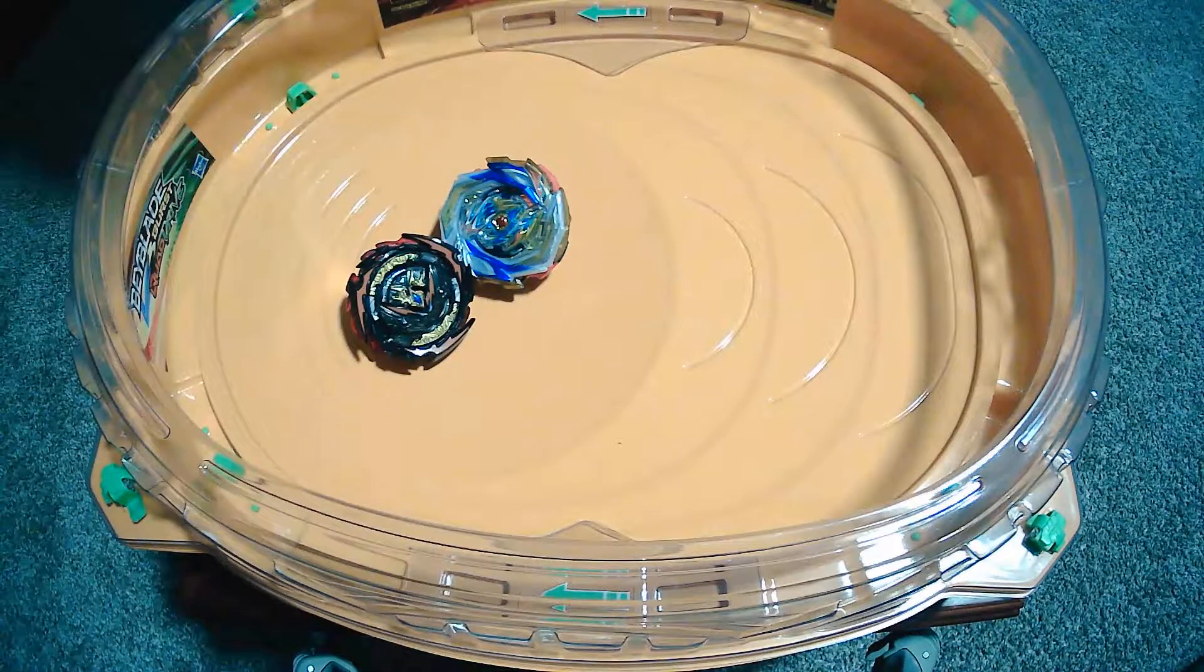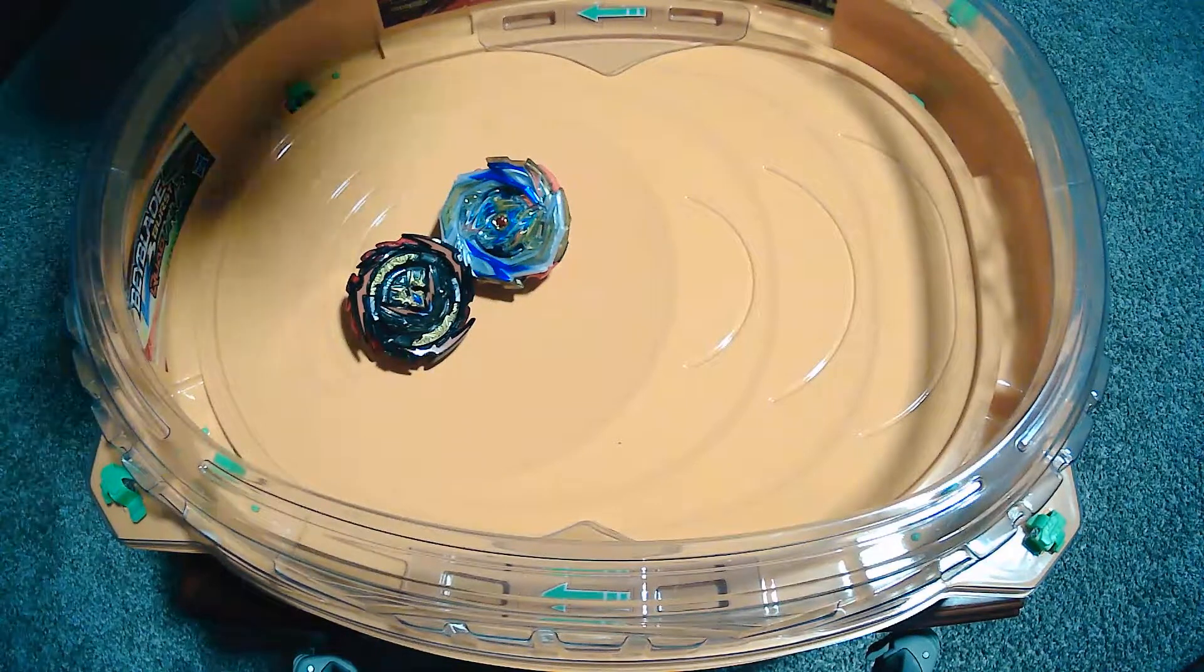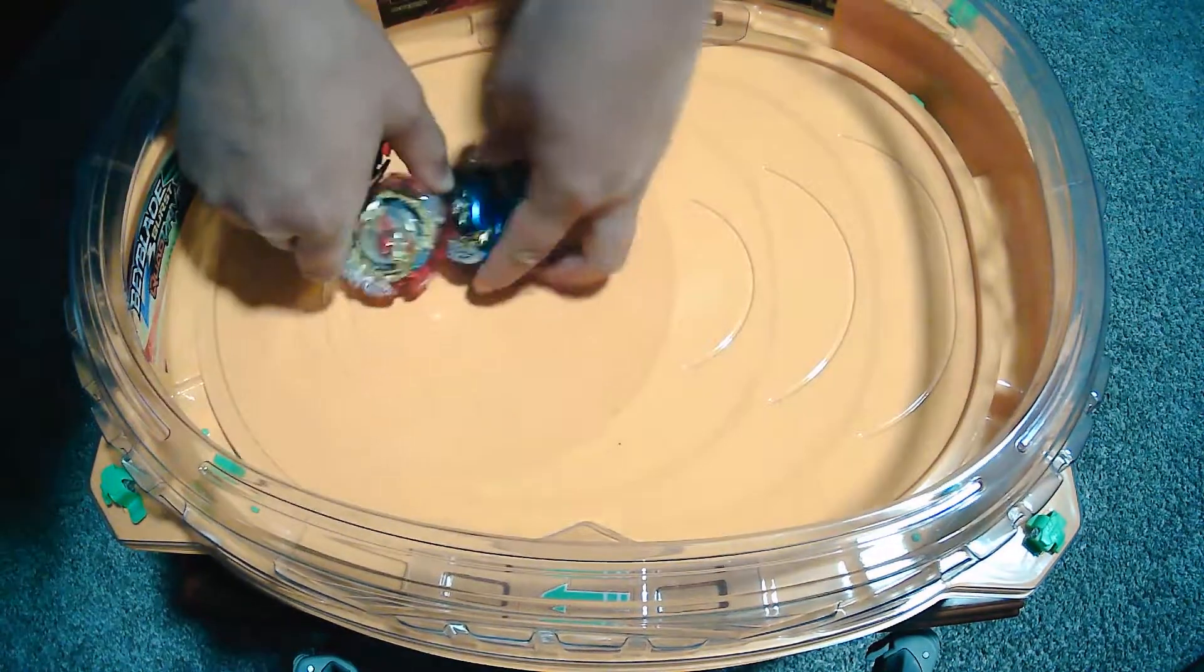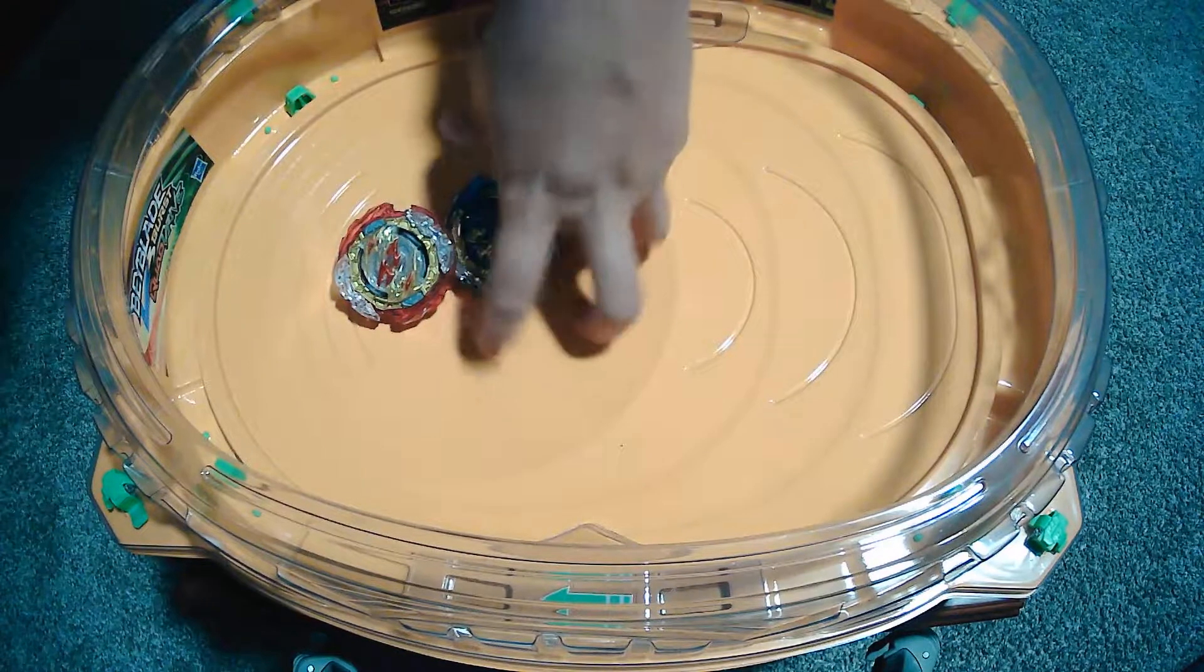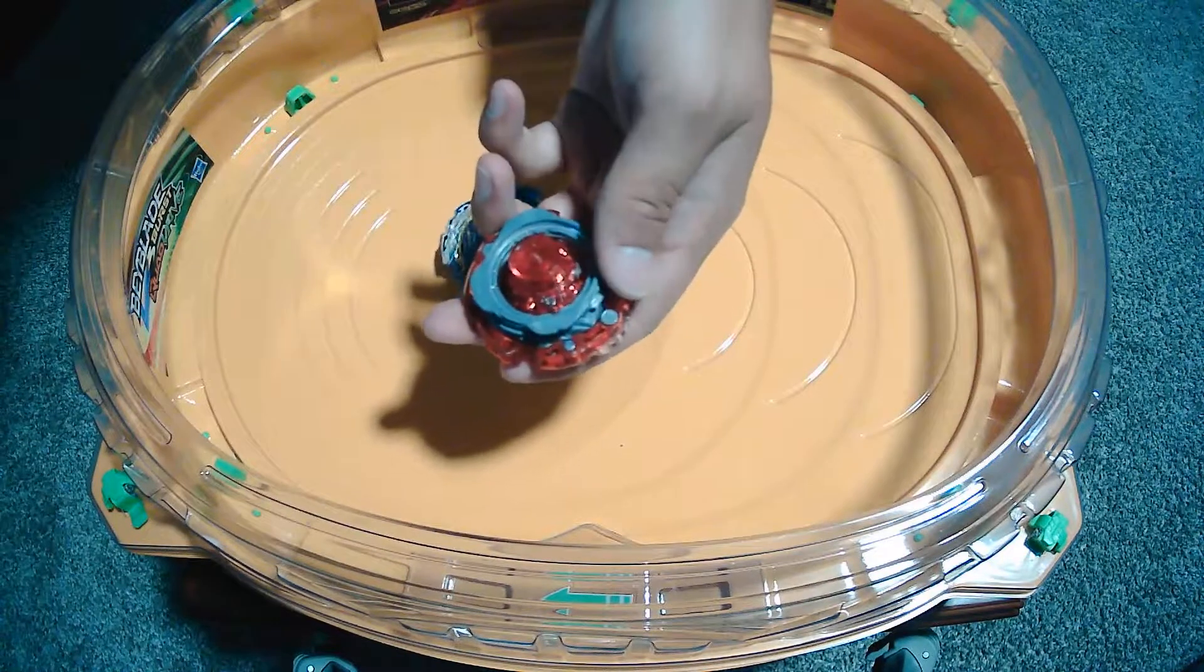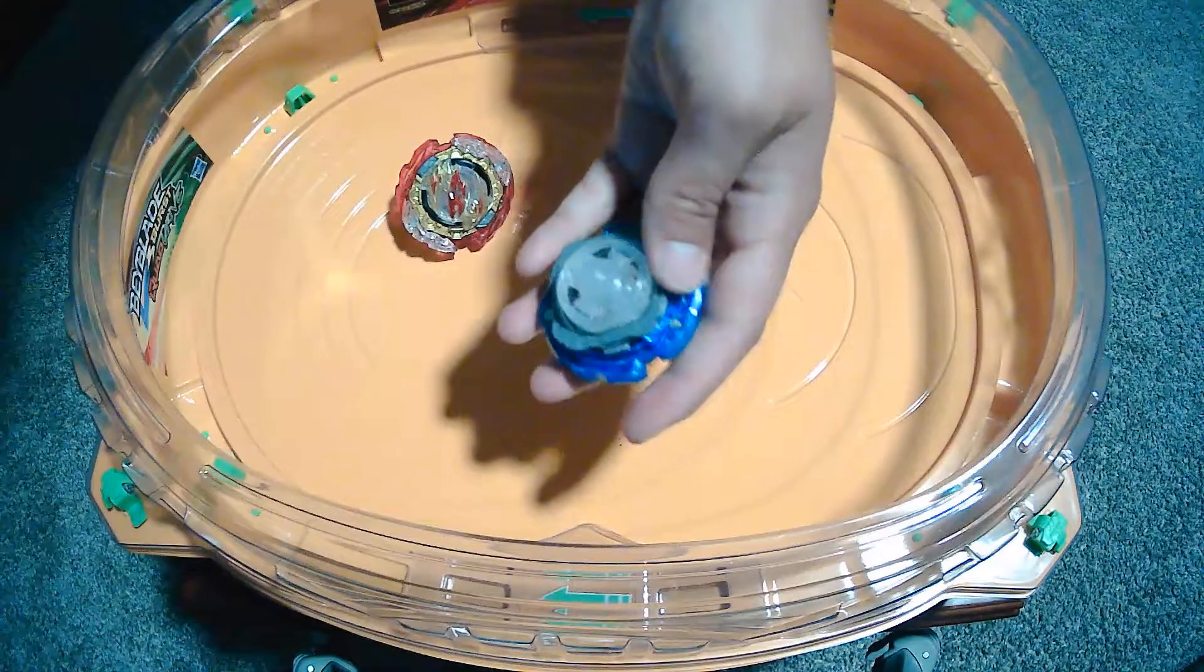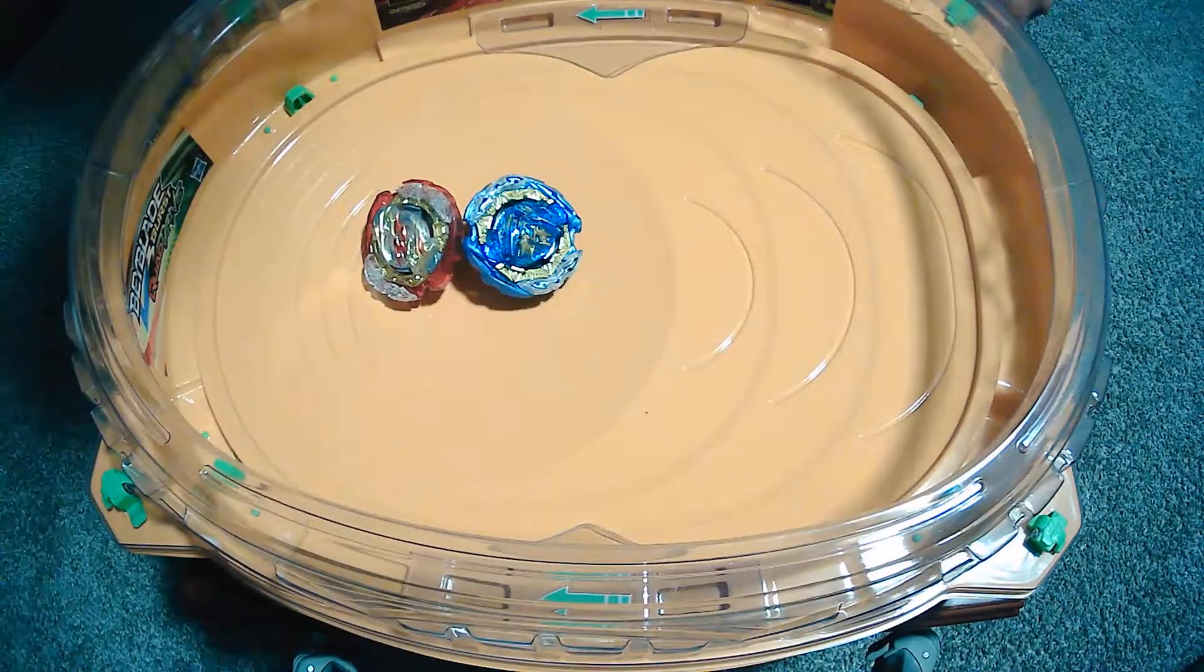So, now, we're going to put Belfire up against these. But, I don't think we should put it up against Astral Spriggan because it's just going to win. So, we're just going to put it up against Cyclone Belial and Cyclone Renrock. This one was from the random booster. So, it wasn't the prize bey. And this one came with the Astral Spriggan starter set. I don't have the S gear because I have it on Destruction Belfire. So, it's just going to be Nexus Wave Dash.